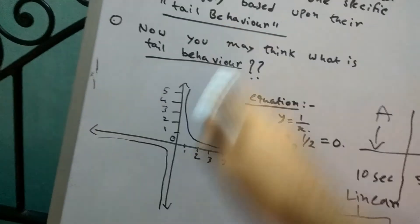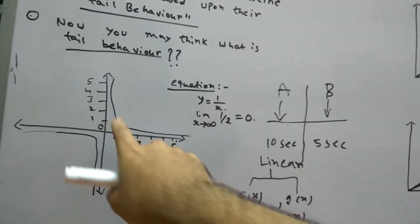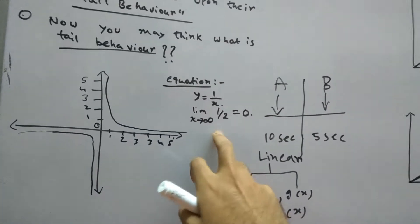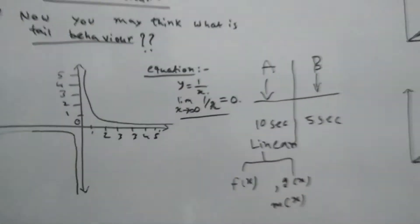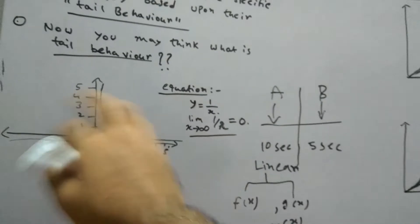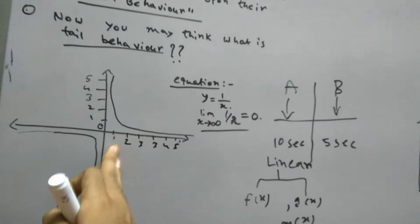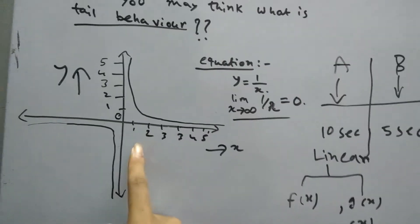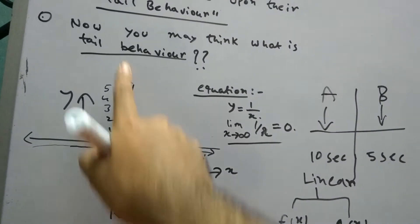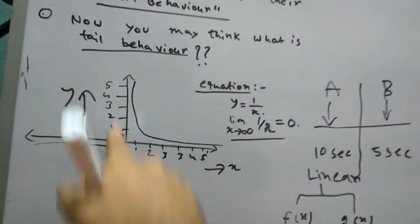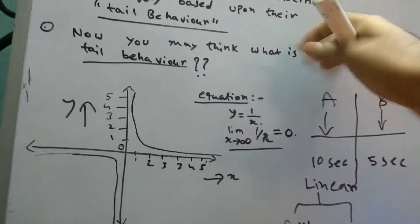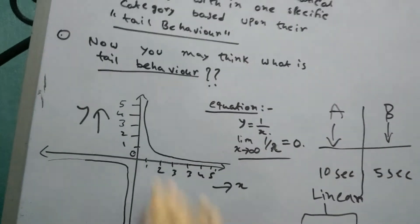To understand tail behavior better, we need to look at graphs. Consider the equation y = 1/x. The limit as x tends to infinity of 1/x equals 0. Looking at the graph, as x increases along the x-axis, the y value keeps decreasing. This specific behavior is characteristic of this type of function — each function has its own behavior.